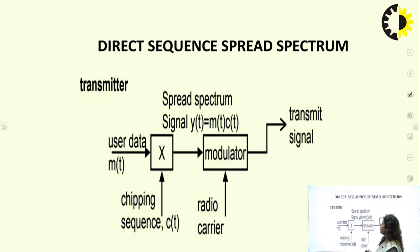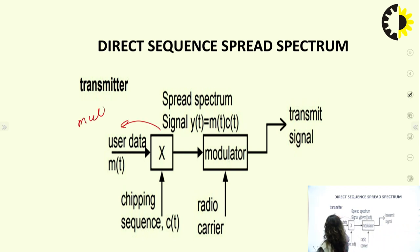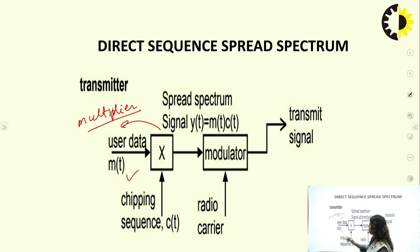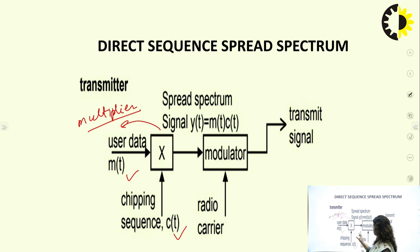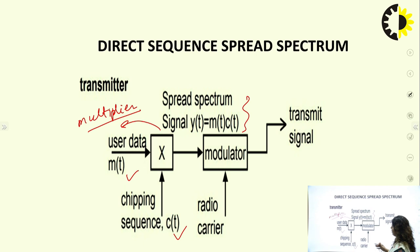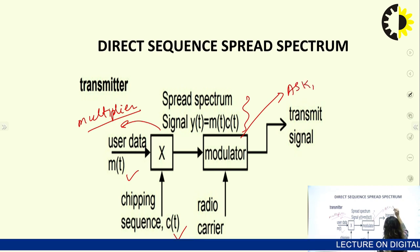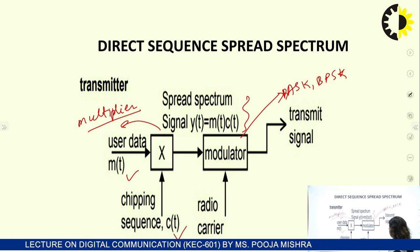The block diagram of DSSS works as follows: at the transmitter, a multiplier circuit takes two inputs — user data m(T) and chipping sequence C(T). These are multiplied to produce the spread spectrum signal Y(T) = m(T) × C(T). At the modulator, BASK or BPSK modulation schemes are used with a radio carrier to modulate the data, which is then transmitted through a channel.